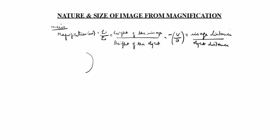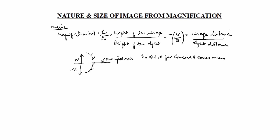Now we will draw a concave mirror. Height above the principal axis is positive; height below the principal axis is negative. ho should be positive for both concave and convex mirror. hi can be positive or negative for concave and convex mirror.